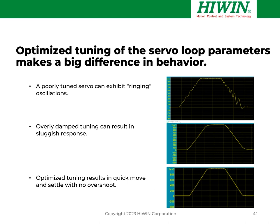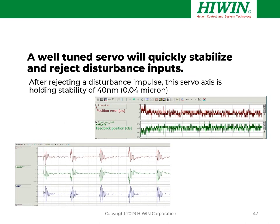Optimized tuning can make a big difference in behavior. Three pictures of servo loop performance to a trapezoidal profile illustrate this: if poorly tuned, you get ringing and oscillations — the system never calms down, wasting energy and generating heat. An overly damped system results in sluggish performance — you can have a very high-performance linear motor but if it's detuned, you don't realize its capability. With optimized tuning, you get quick move-and-settle with no overshoot; you can also optimize for scanning with low ripple using notch filters to remove unwanted frequency disturbances so the servo doesn't excite those resonances. A well-tuned servo quickly stabilizes and rejects disturbance inputs. One real system example showed it holding stability of 40 nanometers (0.04 microns) — outstanding performance from a well-designed, properly specified, and optimally tuned system.